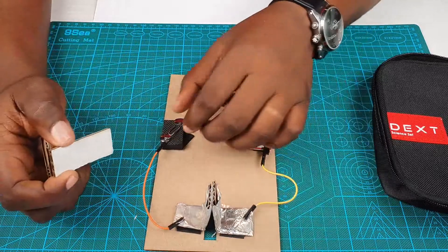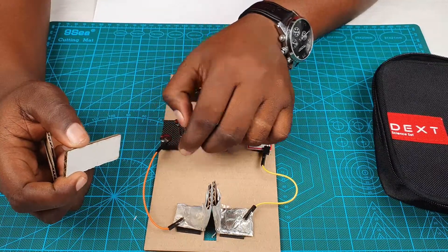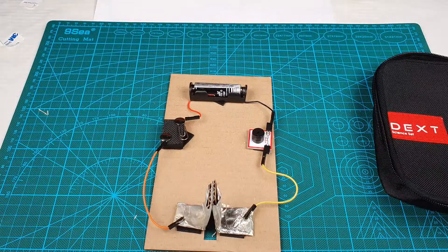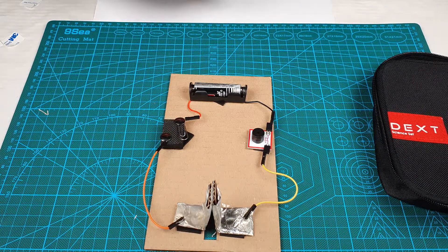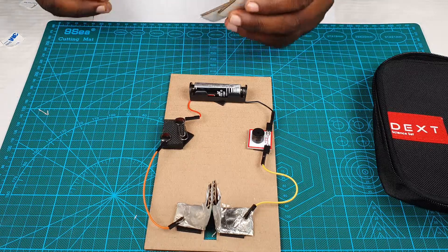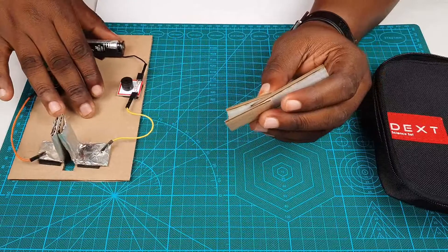Hello and welcome to the final tutorial of our security system project. We've completed building the part that is going to be on the swinging part of the door. Now, let's build the part that is going to be on the fixed side of the door.